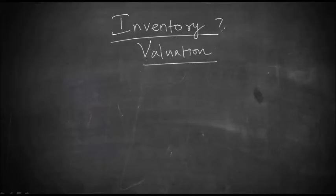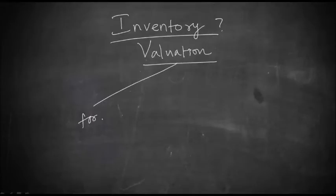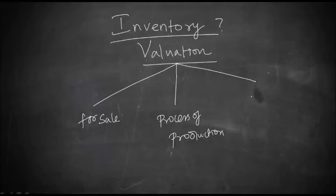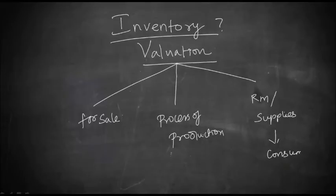Inventory can be classified into three types. First, it can be an asset which is available for sale in the ordinary course of business. Or inventory is something which is in the process of production. Or inventory is basically raw material or supplies that have to be consumed in the production process.